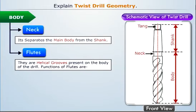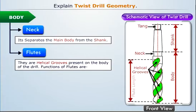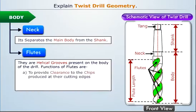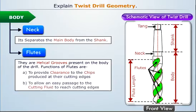As we move below the neck, we see two helical grooves present on the surface of the main body throughout its length. These helical grooves are known as flutes. Their main functions are to provide clearance to the chips produced at the cutting edges and to allow easy passage to the cutting fluid to reach cutting edges.